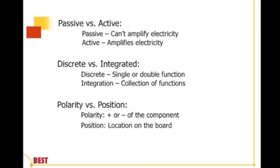Then we have discrete components. These can be either single or double function components — something like a resistor or capacitor. Versus integrated components, where multiple components — I gave you the example of the iPhone CPU — has lots and lots of functions in one little package.